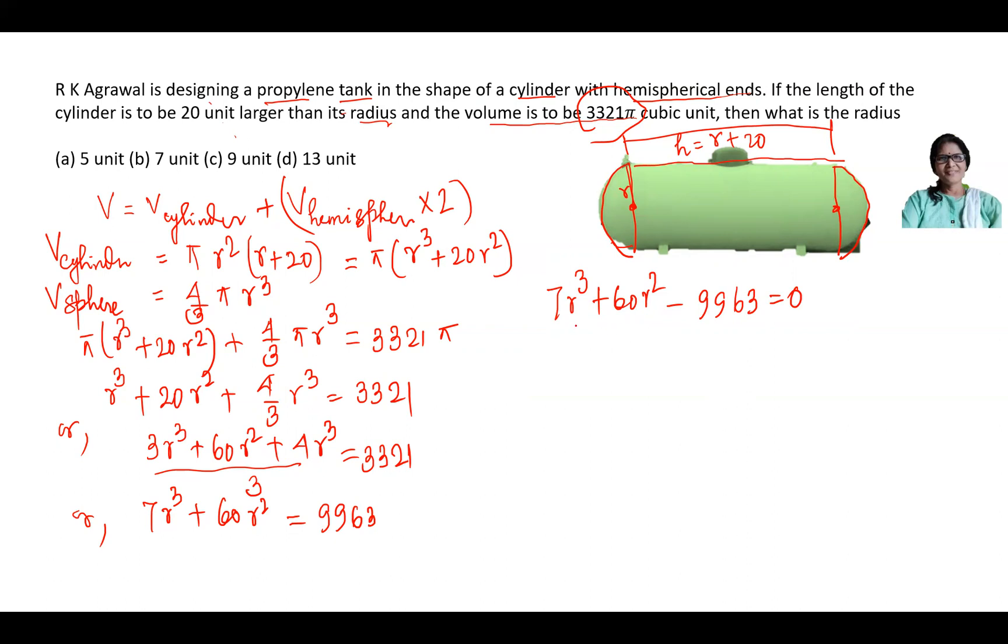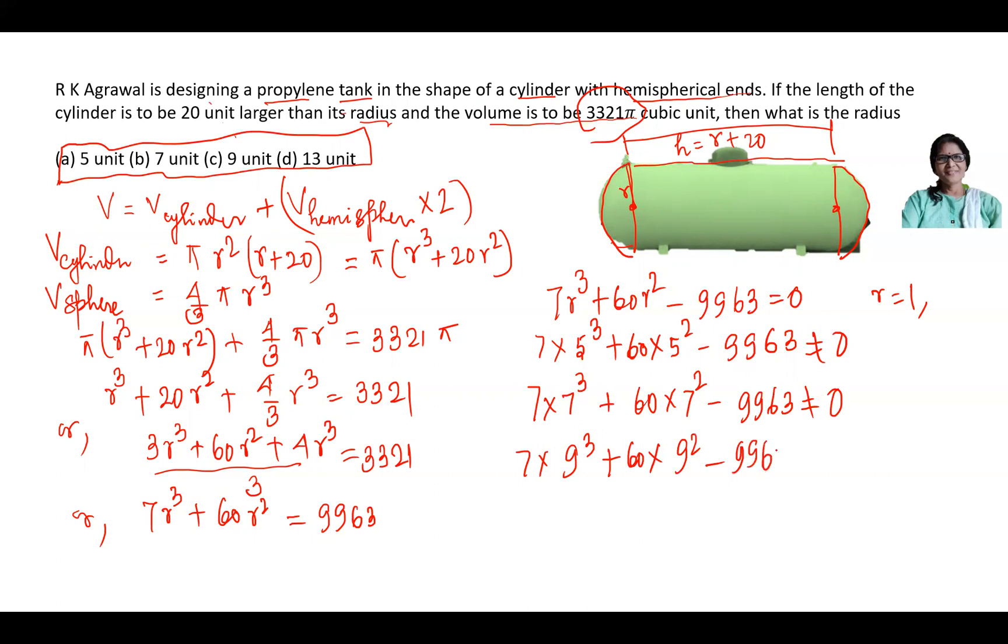You cannot get it by factorization, you have to use the factor theorem. You will test whether values equal 0. So out of these 4 options we will test. First I will put 5: 7 into 5³ plus 60 into 5² minus 9963, it is not equal to 0. Then I will go for 7: 7 into 7³ plus 60 into 7² minus 9963, it is not equal to 0. But if we try 9: 7 into 9³ plus 60 into 9² minus 9963, this will be 0.